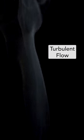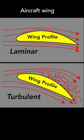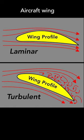Engineers must choose which type of flow to use. They design aircraft wings to keep the flow laminar over as much of the wing as possible, to reduce the drag caused by turbulent flow.